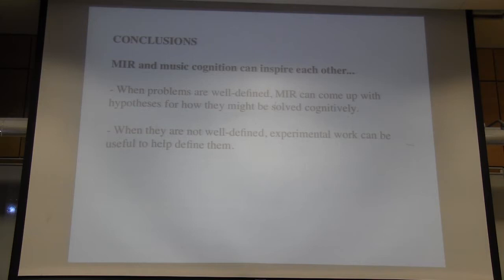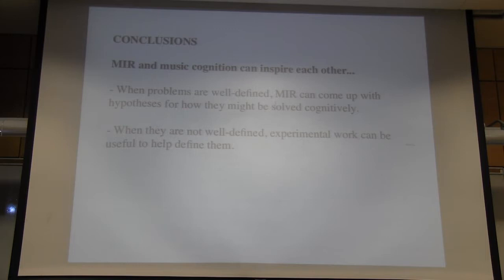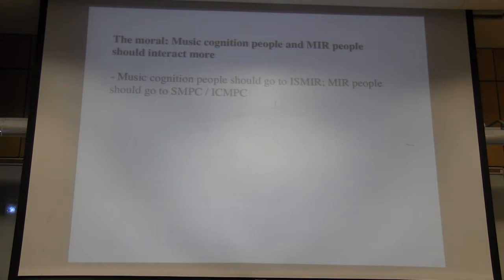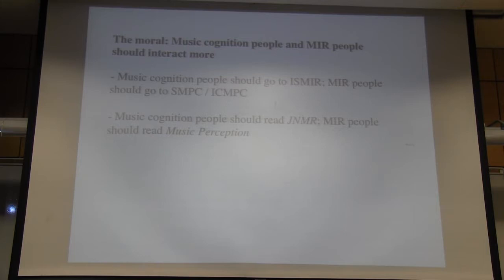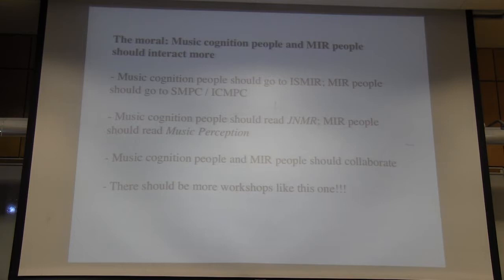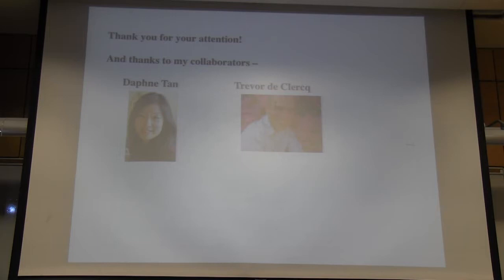My conclusions: MIR and music cognition can inspire each other. When you have well-defined problems, music information retrieval can come up with hypotheses for how they might be solved cognitively. When problems are not well-defined, experimental work can help define and clarify them. The big moral is that music cognition people and MIR people should interact more — music cognition people should go to ISMIR, MIR people should go to SMPC, music cognition people should read JNMR, MIR people should read Music Perception, and there should be more workshops like this one. Thank you for your attention and thanks to my collaborators, Daphne Tan and Trevor de Klerk.